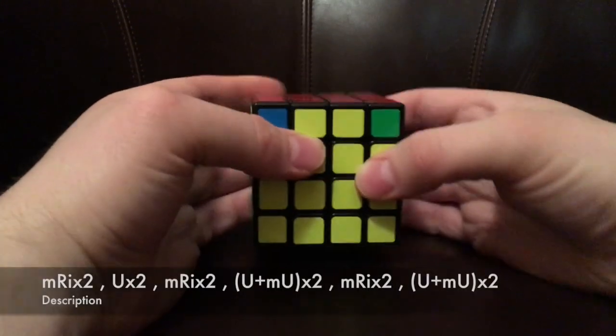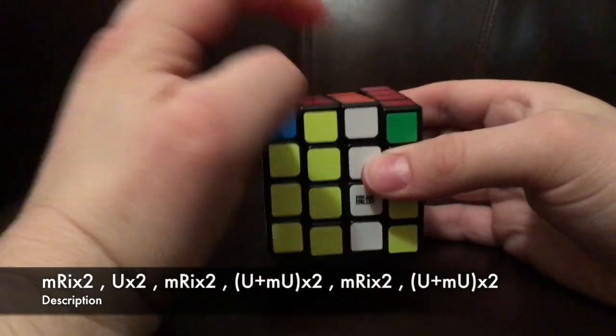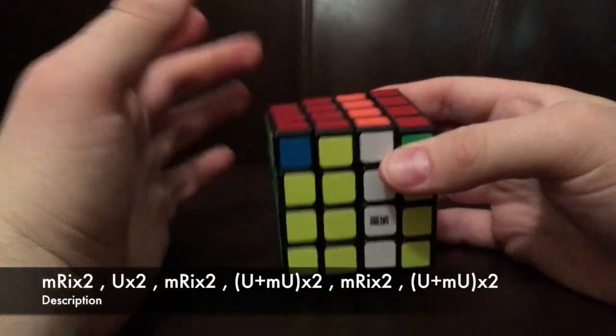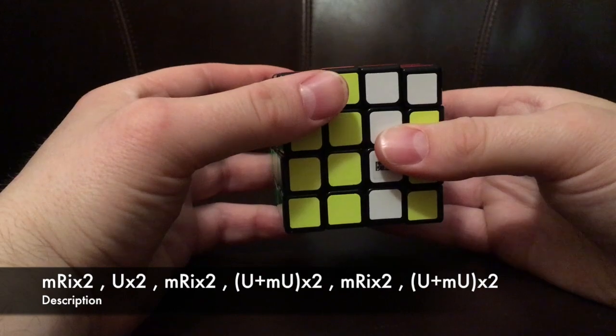Okay, so in this case, you're going to do middle-right two, so move it twice. I just do it down. In this case, you're going to rotate the top layer twice.